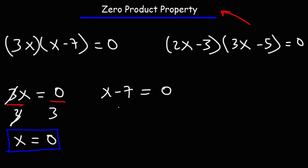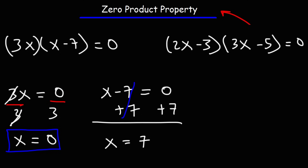For the second equation, x minus 7 equals zero, we simply add 7 to both sides, and we get X equals 7.